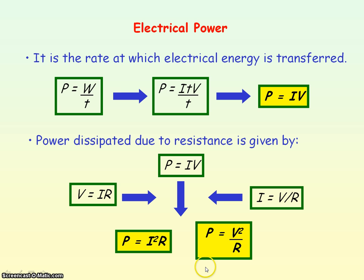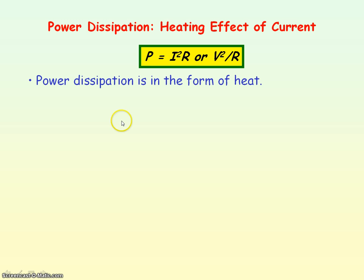These are the three equations for power, and they're given on your formula sheet. When you have resistance and current, the power dissipated is in the form of heat.